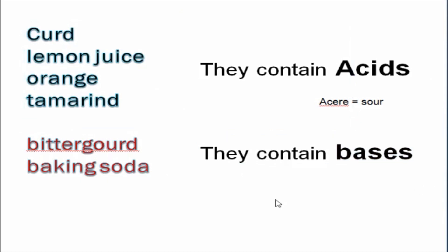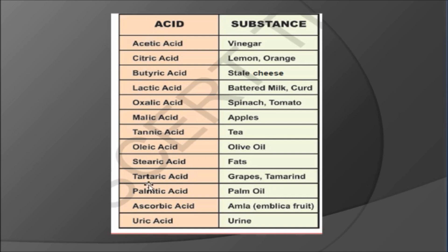In the next slide, here are the names of the acids present in our food items. Lemon and orange contain citric acid. Curd contains lactic acid. Tomato contains oxalic acid. Raw or green apple contains malic acid, which is why they also have a sour taste. Tamarind contains tartaric acid. Different types of acids are present in different types of substances.